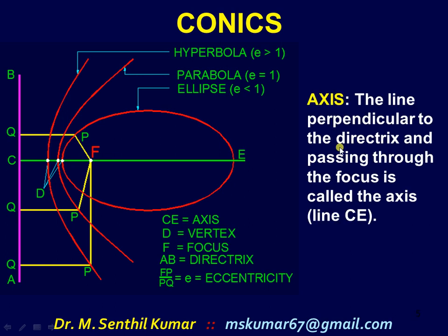The Axis: The line perpendicular to the directrix and passing through the focus is called the axis, denoted as line CE. The green line CE is nothing but the axis. You can see this green line CE is perpendicular to AB and is passing through the fixed point F.